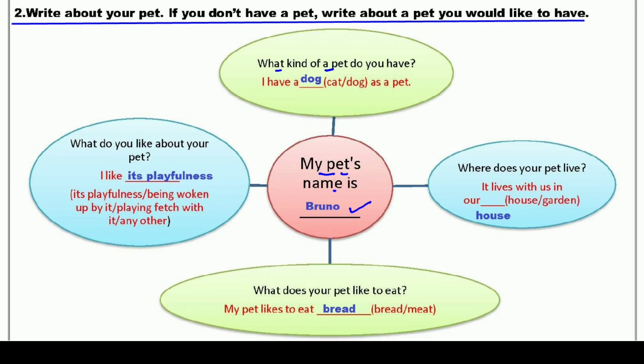پھر اس کے بعد: What kind of a pet do you have? آپ کے پاس کونسا پالتو جانور ہے؟ تو میں نے for example لکھ دیا: I have a dog as a pet — یعنی میرے پاس dog کے روپ میں ایک پالتو جانور ہے۔ جن کے پاس cat ہے وہ cat بھی لکھ سکتے ہیں۔ کئیوں کے پاس rabbit ہوتا ہے یا کچھ اور — تو آپ وہ لکھ دیں جو آپ کے پاس pet ہے۔